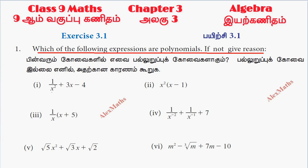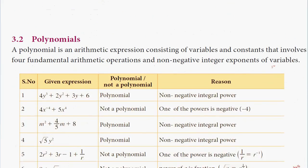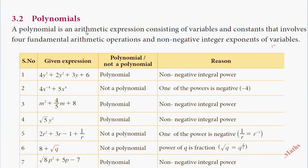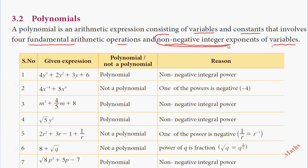What are polynomials? Polynomials have non-negative integer exponents of variables. This is very important. Variables must be non-negative and integer. Combined, non-negative integer means a positive integer. Here are some examples.